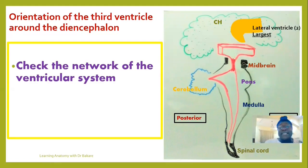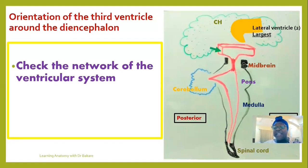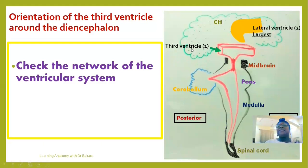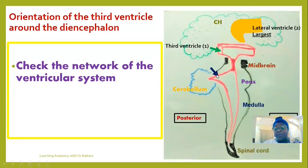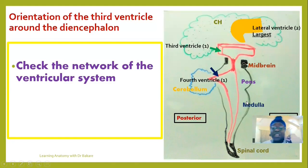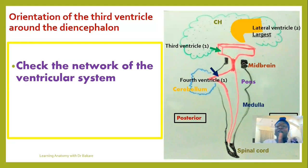We also have the third ventricle, located inferior to the lateral ventricles — below the cerebral hemispheres — highlighted in green, and it is one in number. Going more inferiorly, we have the fourth ventricle, highlighted in blue, located between the pons and medulla anteriorly and the cerebellum posteriorly. So in totality, we have four ventricles: two lateral ventricles, one third ventricle, and one fourth ventricle.